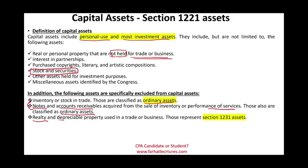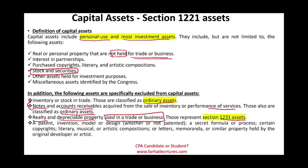Also excluded: real property and depreciable property used in trade or business — those are Section 1231 assets. Patents, inventions, models, designs, secret formulas, certain copyrights, musical or artistic compositions held by the original developer or artist are not capital assets. Certain U.S. government publications and supplies used in business are also excluded. Anything used in business is not a capital asset.